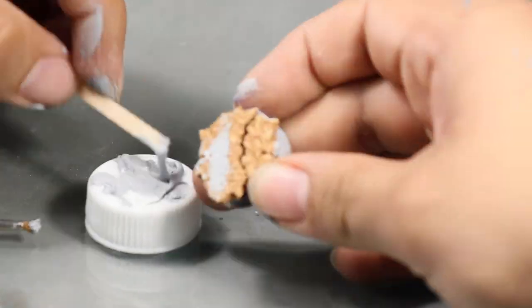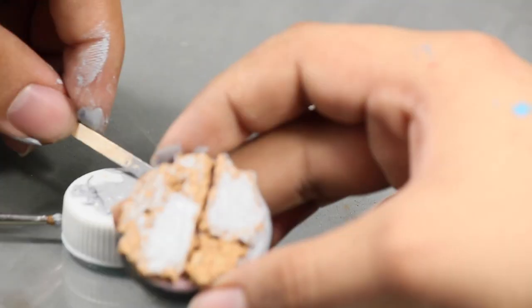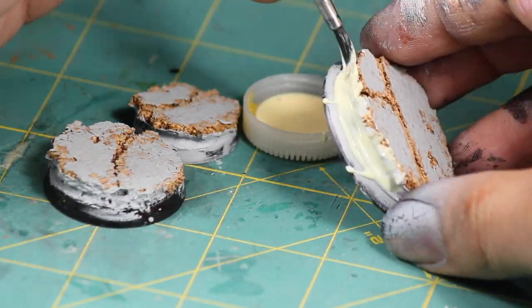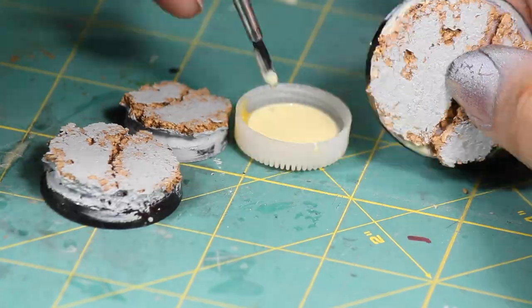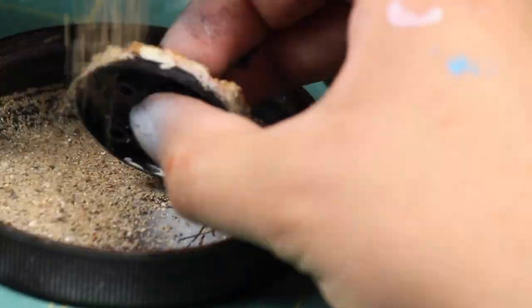I also applied putty to the top of the cork to give the impression of hard asphalt. Then I applied some wood glue over the putty surrounding the road so that I could apply some fine grain sand. This will look like it was ripped straight from the road.